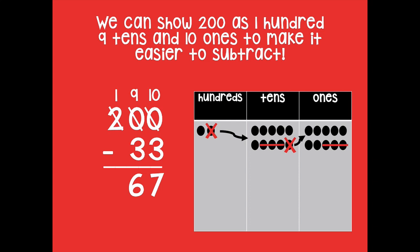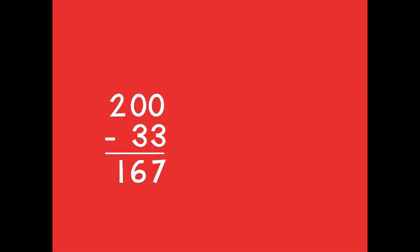And then we're going to go to our tens place. 9 minus 3 equals 6. And then our hundreds place, there's nothing to subtract. So 1 minus 0 equals 1. So 200 minus 33 equals 167.